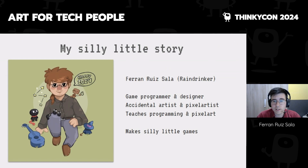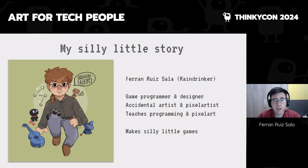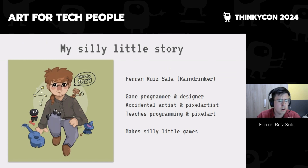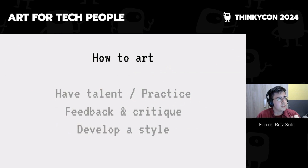I'm Real Sala, known as Rain Drinker online. I'm a game programmer and designer, and I've become a bit of an accidental artist and pixel artist. I started dabbling because of indie reasons — game jams, landing in some indie companies — and I've had to take it more seriously. I ended up teaching pixel art even at a college-like level, together with programming.